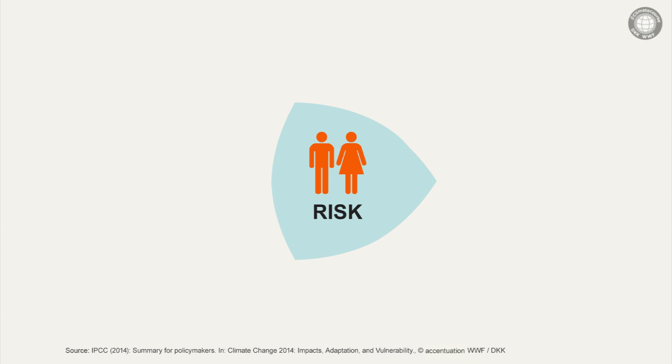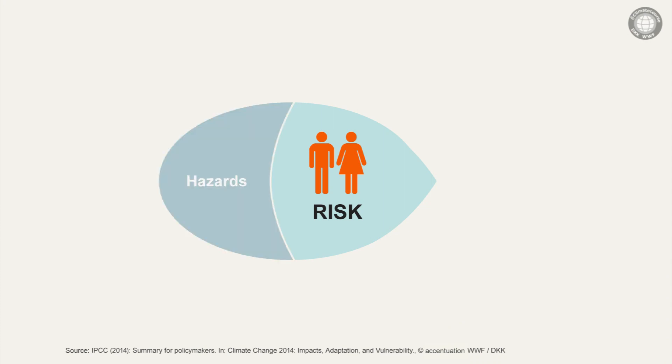The different climate impacts also interact with each other. Human society being affected by these climate impacts has to be one focus. In its assessment report, the IPCC has outlined three aspects that illustrate the concept of risk and the expected risk change for the people affected.